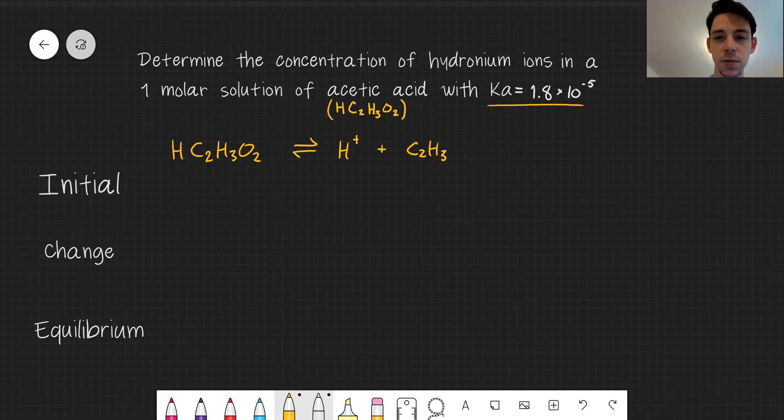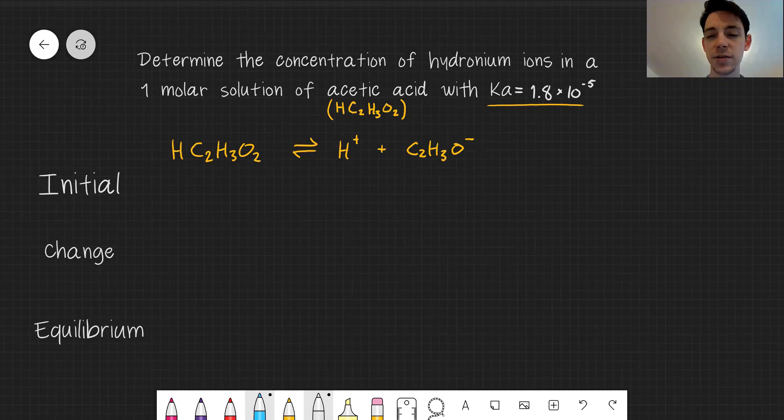When it gives away its proton, what is left is acetate. So this is our equilibrium. It would exist between acetic acid and the dissociated form of hydronium and acetate.